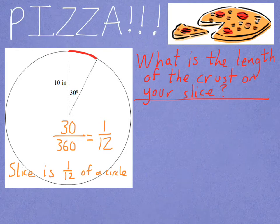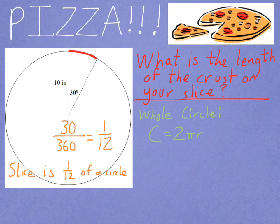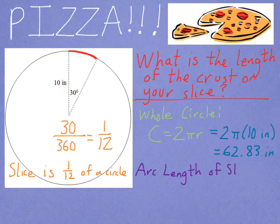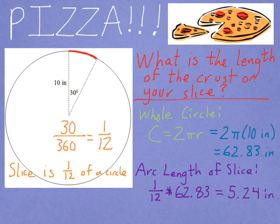It might help you to know that the whole circle, the length around the outside — which is called the circumference — is 2 pi times r. For the case of the entire circle here, that's 2 pi times 10, which is 62.83. That's the length of the crust around the entire pizza. Now the size of the slice hasn't changed — it's still 1 twelfth of a circle. So to find the arc length of that slice, I'll do 1 twelfth times 62.83. That tells me that the length of the crust on just that slice is 5.24 inches.